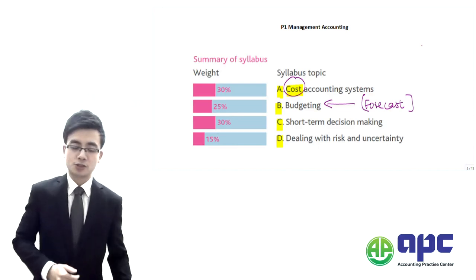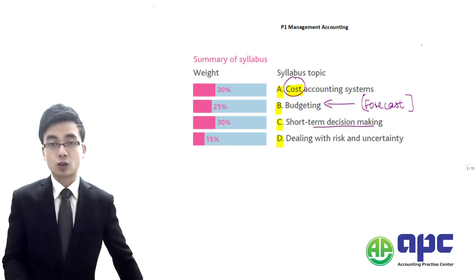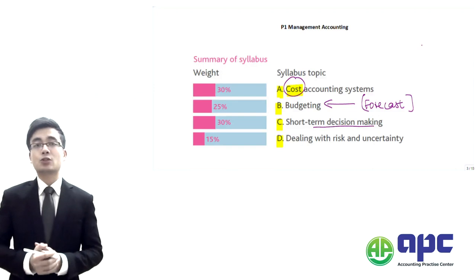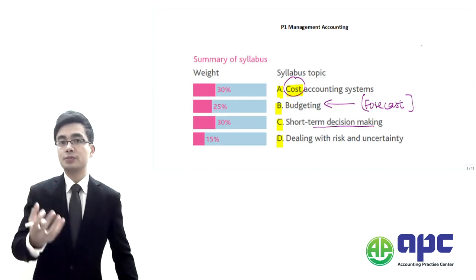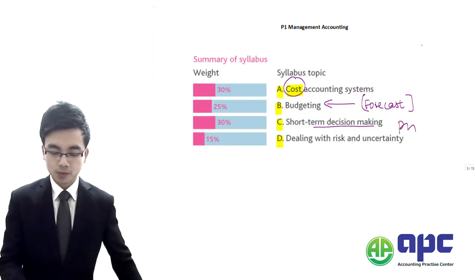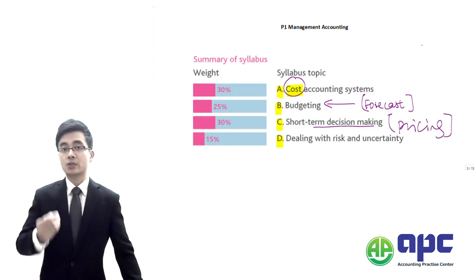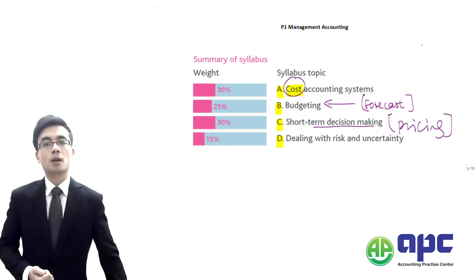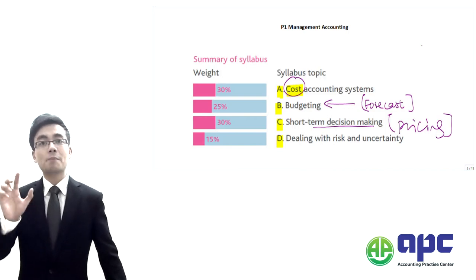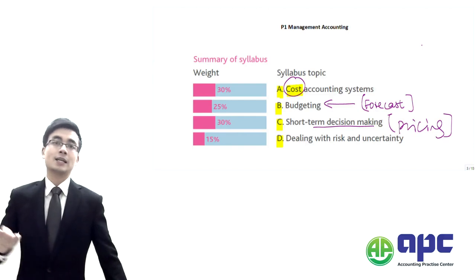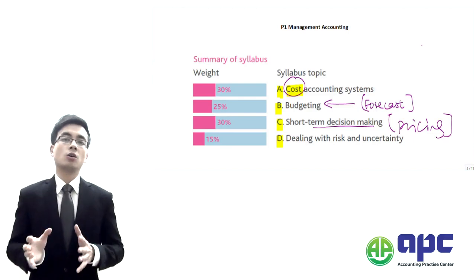Once you look at the budgeting section, Section C is where we're going to make the short-term decision. How we're going to make the short-term decision is absolutely important as well. For example, you're going to make the pricing decision — how much you're going to set in order to sell it to the final customer — whether you set it at $12, $10, or maybe $10.99 per bottle. These are the techniques that you can use.